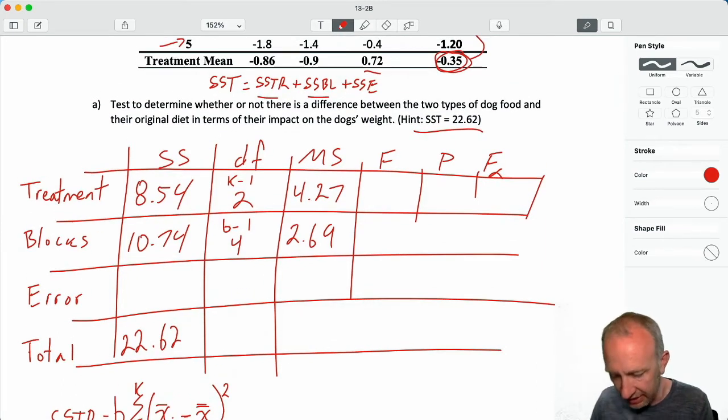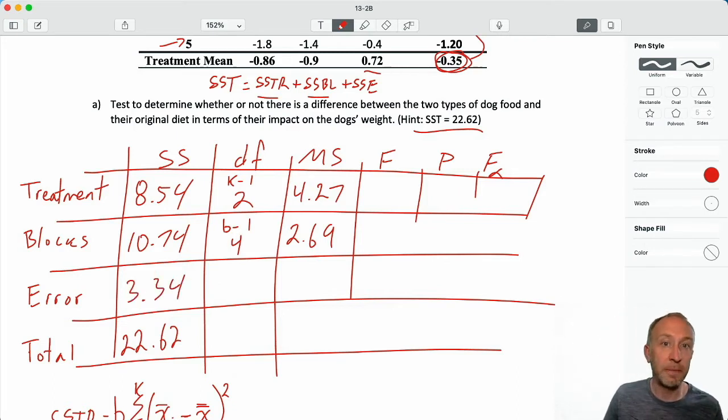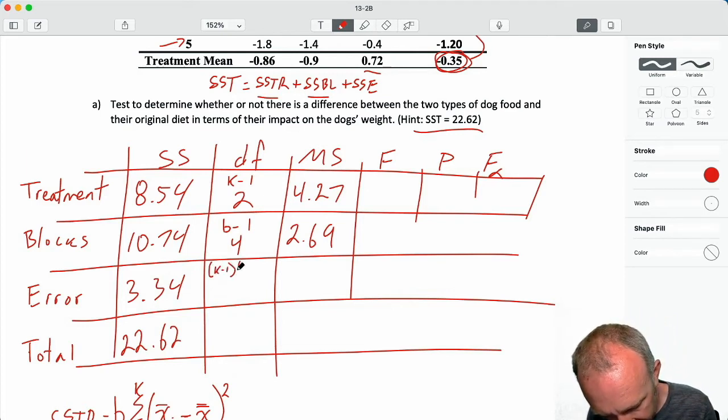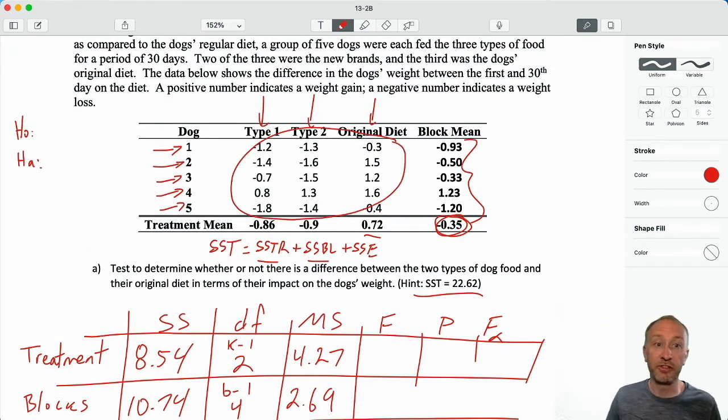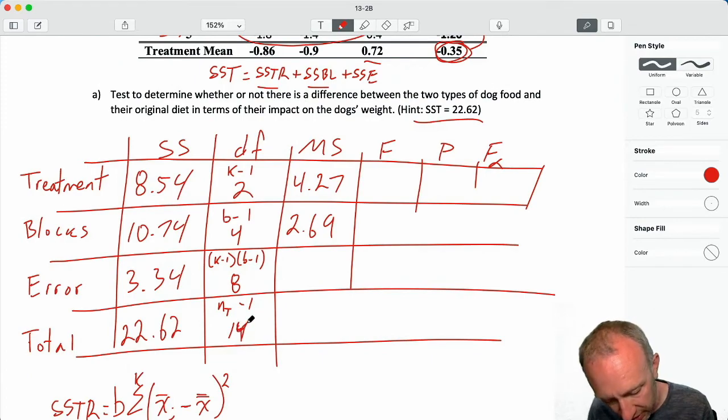Now, calculating SSE, 22.62 minus 10.74 minus 8.54. That gives me my error of 3.34. Degrees of freedom, k minus 1 times b minus 1. So that's just the product of what's above. Here I have 8. NT minus 1, I have 14, because I have 3 treatments each with 5 observations. 15 minus 1 is 14.